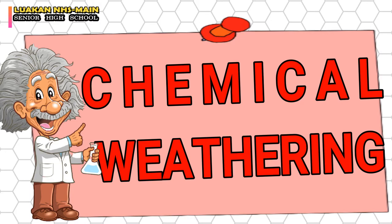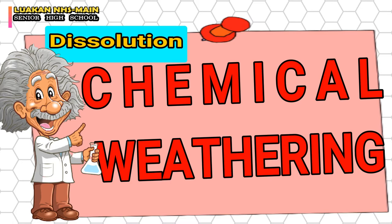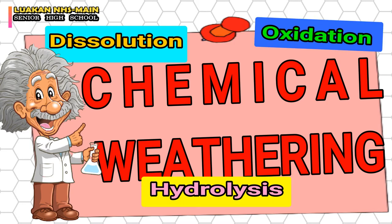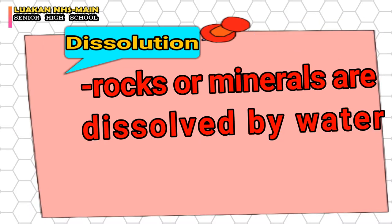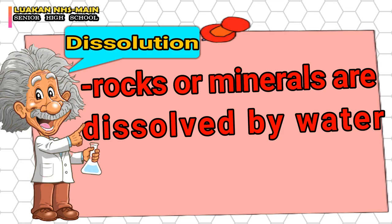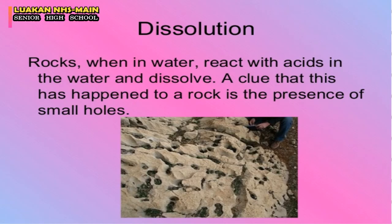Now that we're done with physical weathering, let's move on to chemical weathering. Under chemical weathering there are three processes: dissolution, hydrolysis, and oxidation. Dissolution happens when rocks or minerals are dissolved by water. Water plays a large role in chemical weathering — not just in dissolution but also in the other types. Our rocks are formed from minerals, and many minerals are soluble in water. When cracks form in a rock and water enters, the water will react with and dissolve some minerals.